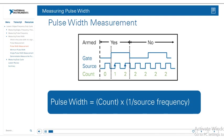Pulse width measurements are very similar to period measurements. The only difference is where we stop counting. With period measurements, we started and stopped counting at two rising edges on the gate signal. However, with pulse width measurement, we only want to count during the pulse width — so we start counting on the rising edge and end on the falling edge, as shown in the diagram. It's also possible to start the counting on the falling edge and stop with the rising edge.